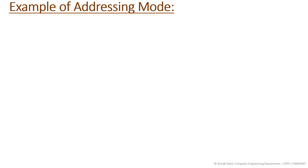In the previous video we saw the different addressing modes, which specify how you get your operand. We covered implied mode, immediate mode where the operand is specified in the instruction itself, register mode where operands are in processor registers, register indirect mode where the register holds the address of the operand, auto increment/decrement mode, and direct address mode where the effective address equals the address part of the instruction.